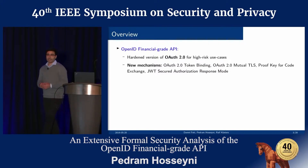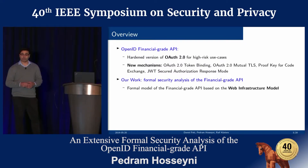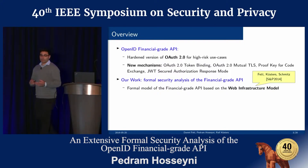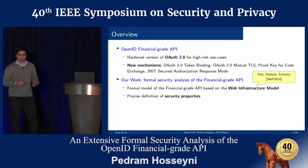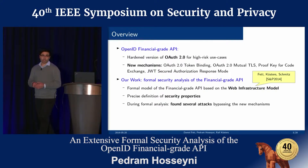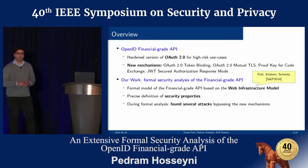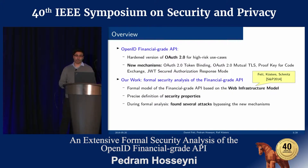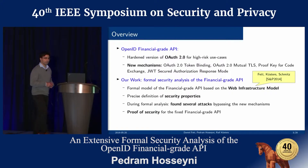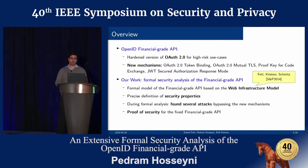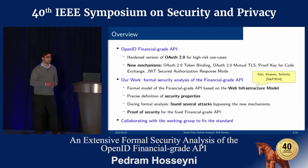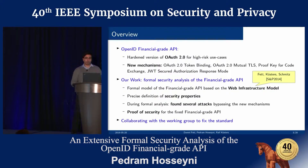What we did is formally analyze the Financial Grade API using the web infrastructure model, which was developed by our working group. Based on this, we created a formal model of the Financial Grade API and defined security properties. During the analysis, we found several attacks, not only on the Financial Grade API itself, but also on some of its new security mechanisms, which are independent of the Financial Grade API. We also provide fixes for all attacks that we found, and finally prove that the Financial Grade API within our model is secure. We are also working with the OpenID Foundation for fixing the standard.